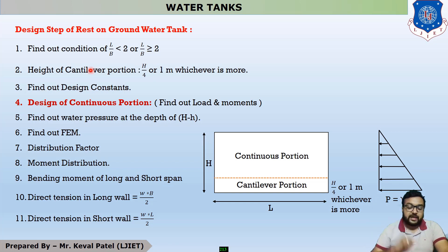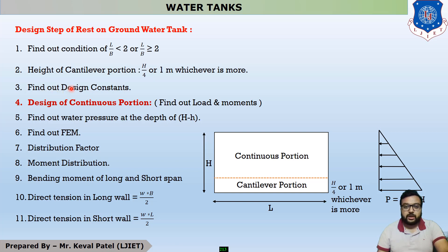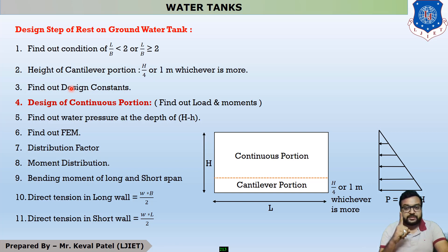After determining the condition, find the height of the cantilever portion. The cantilever height is H/4 or 1 meter, whichever is more. Then find the design constants — there are four design constants. Two are already discussed: modular ratio m, where m = 280 / (3 × σ_cbc), and neutral axis depth factor K.